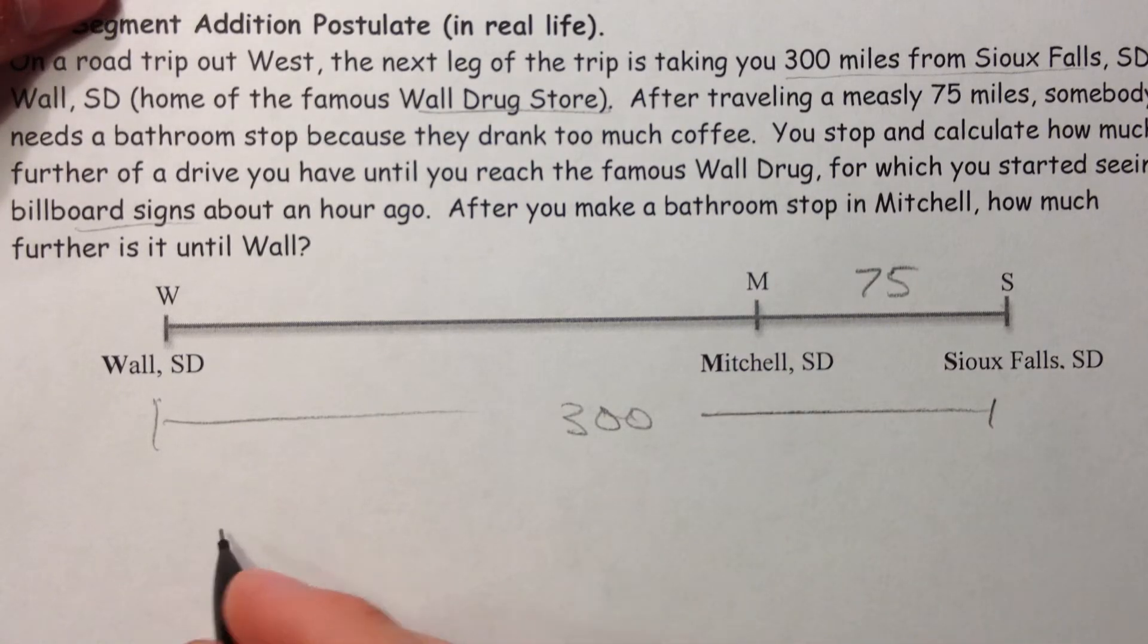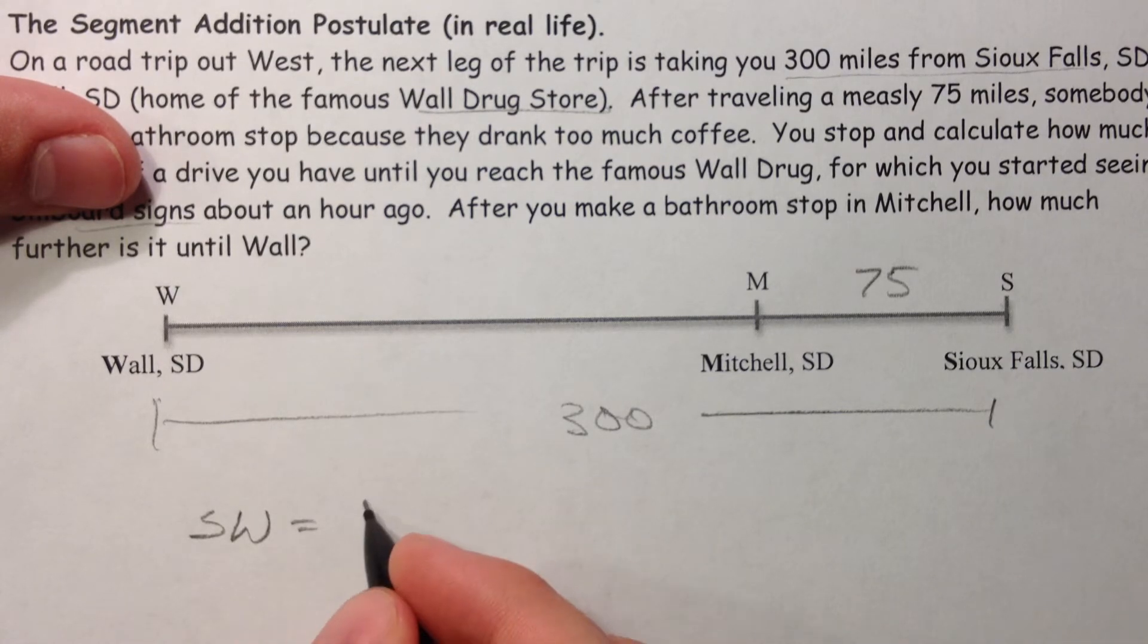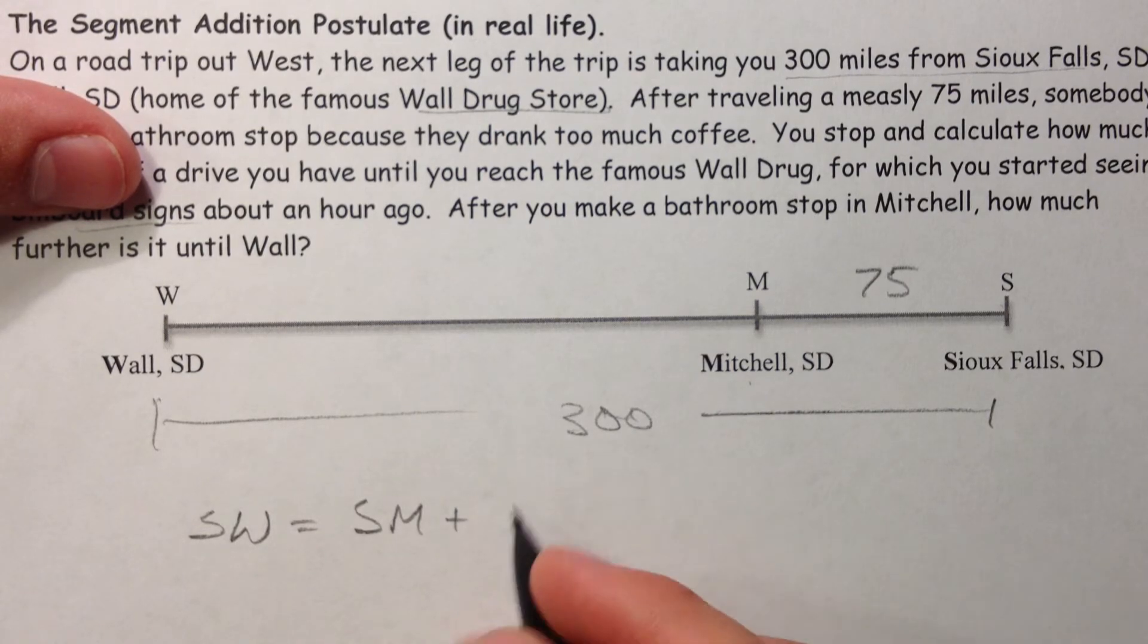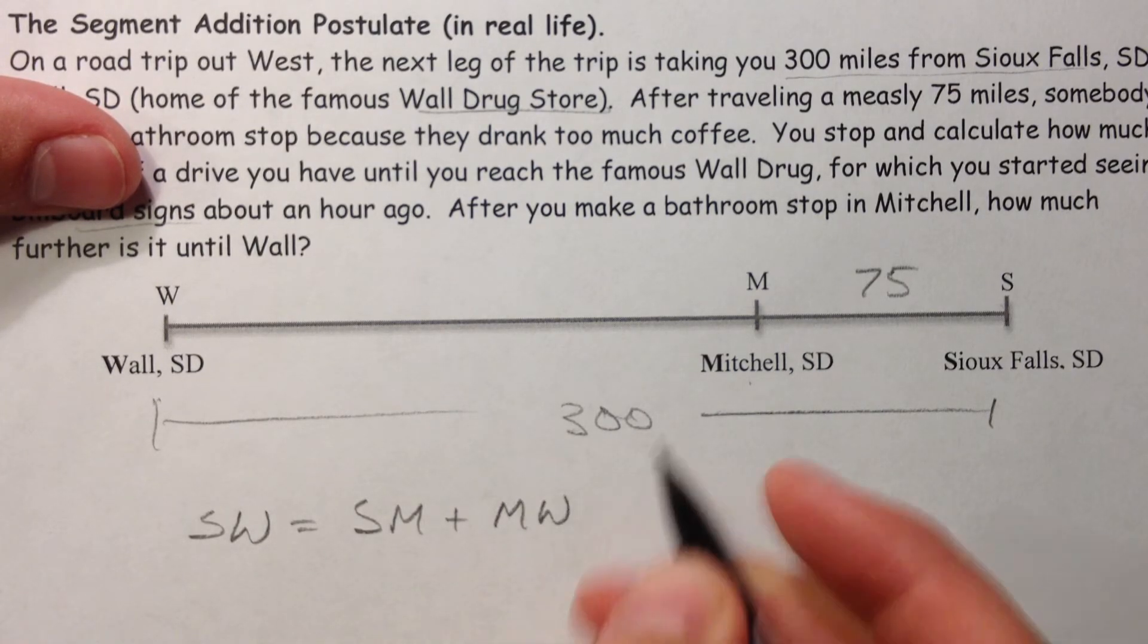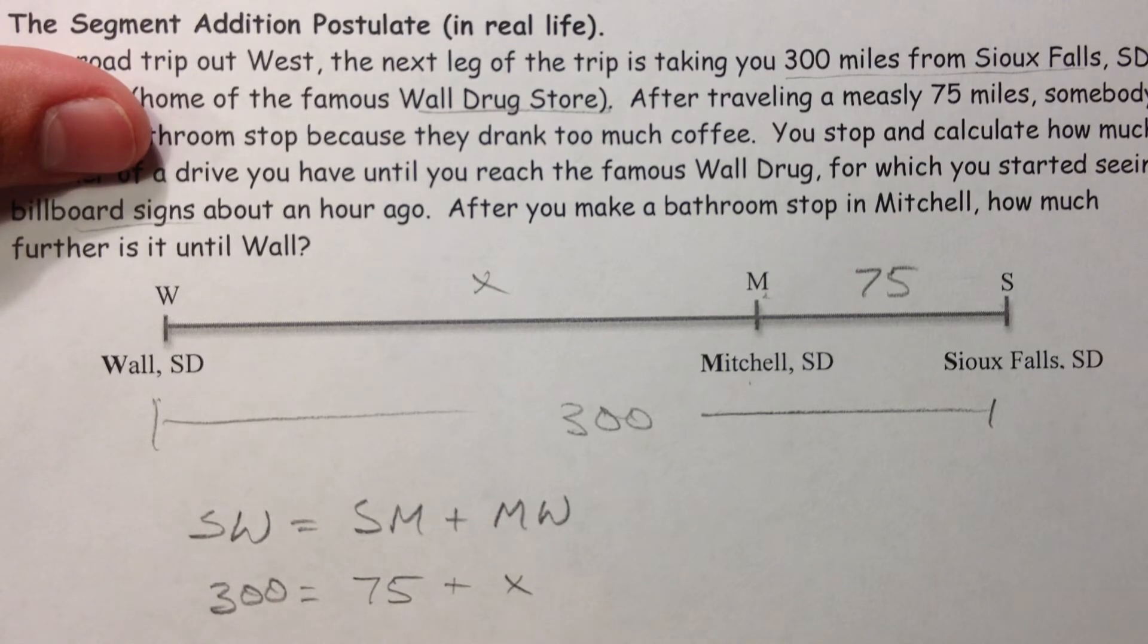And so using our segment addition postulate, that would mean that from S to W, Sioux Falls to Wall, you'd have to add the total from your stop in Mitchell, South Dakota to MW. So SM plus MW equals the whole thing, and so we've got 300 equals 75 plus something, let's call it X. Or you could even call it MW. So you subtract your 75, and you know that you have to get 225.